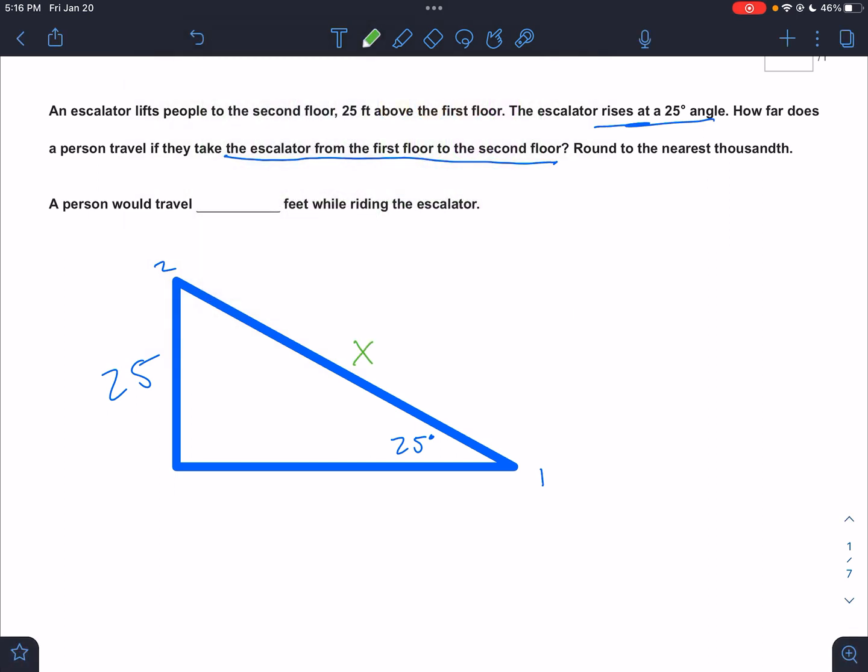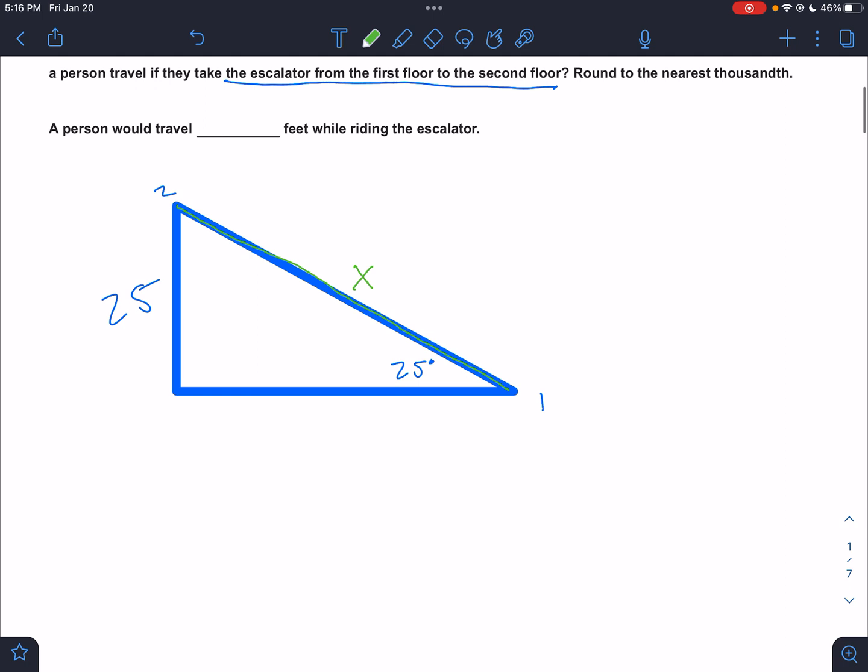That would be the hypotenuse, right? Escalators are like stairs guys, not elevator. So if you're traveling on the escalator, you're going along the hypotenuse here. So this would be opposite hypotenuse. This would be the sine of 25 equals opposite 25 over hypotenuse x. So it would be x equals, right, if x is down low they switch places.